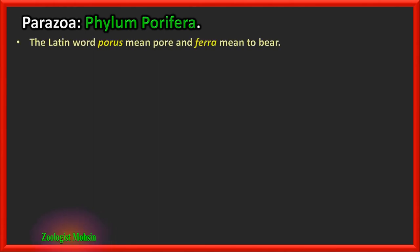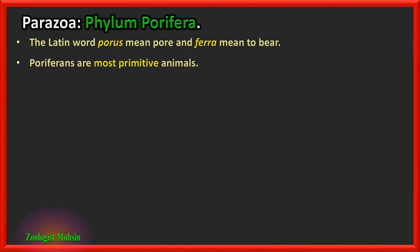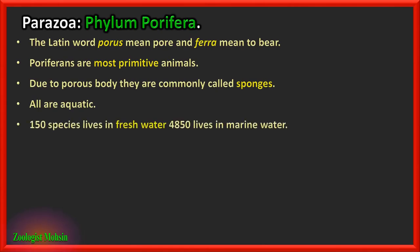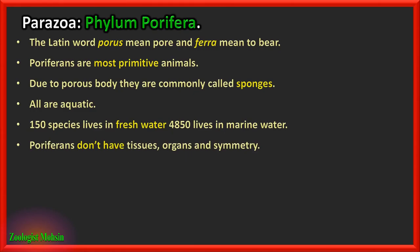Phylum Porifera — the great Parazoa. The Latin word 'porus' means pore and 'ferre' means to bear, hence the name Porifera. They are the most primitive animals. Due to their porous body they are commonly called sponges. All are aquatic — 150 species live in fresh water while 4,850 live in marine water, giving a total of 5,000 species. Importantly, Porifera do not have tissues, organs, or symmetry.